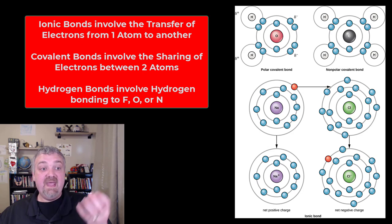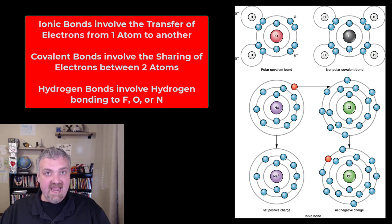That transfer of electrons has now made them a positive ion, sodium, also known as a cation, and made chlorine the negative chloride ion, also known as an anion. Now they have opposite charges and they're attracted to each other. So that's going to be ionic bonds, the transfer of electrons.